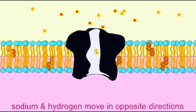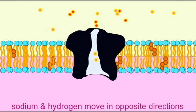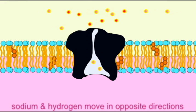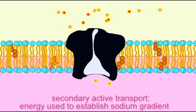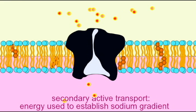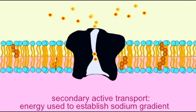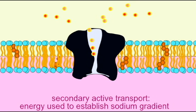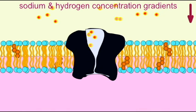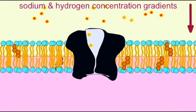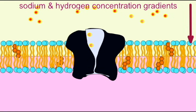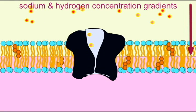This is also a type of secondary active transport because, while ATP energy is not being directly used to power this pump, it functions only because of this sodium gradient, which did require ATP energy to establish as ATP energy was used to power the sodium-potassium exchange pump, which pumped the sodium out of the cells in the first place.